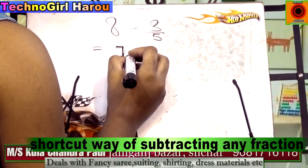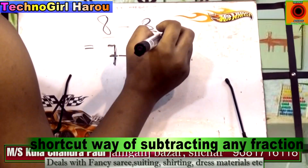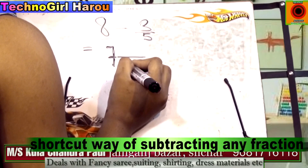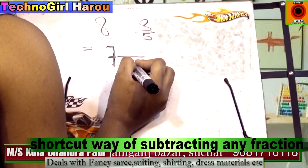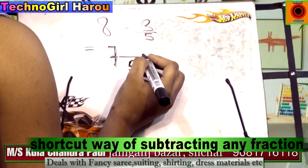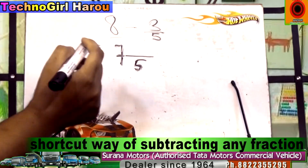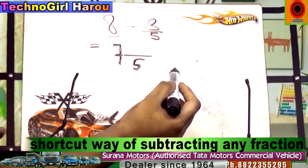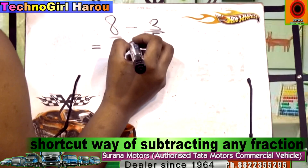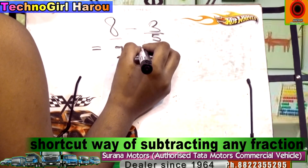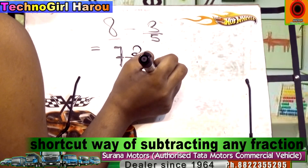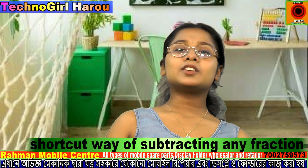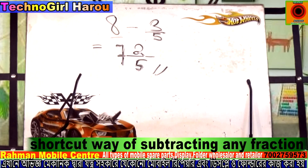Now we draw a line and write down the denominator, which is 5. Now simply subtract the numerator from the denominator, which is 5 minus 3. That is 2. So the result is 7 and 2 by 5.